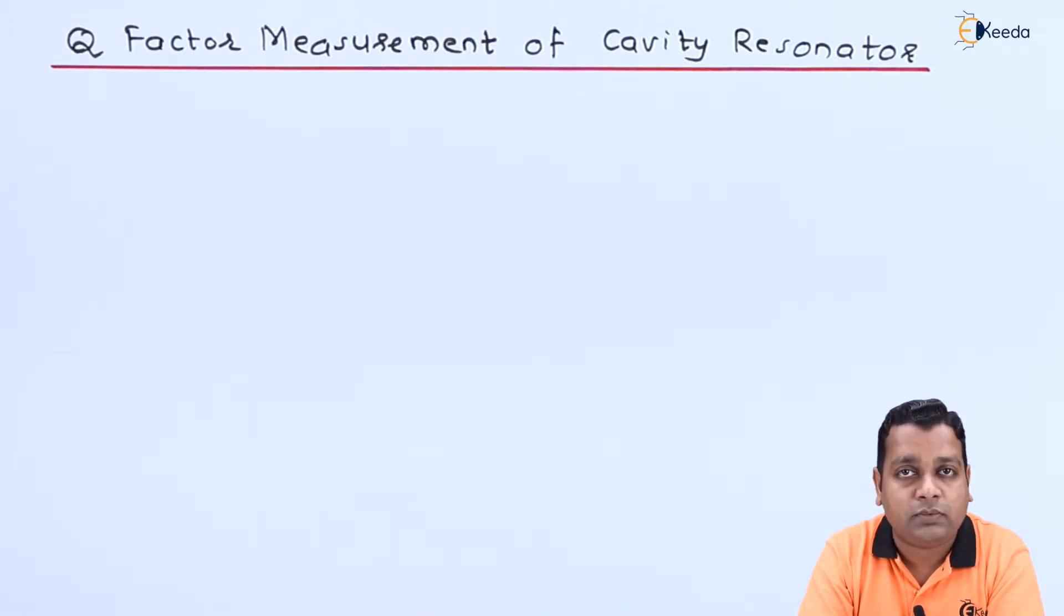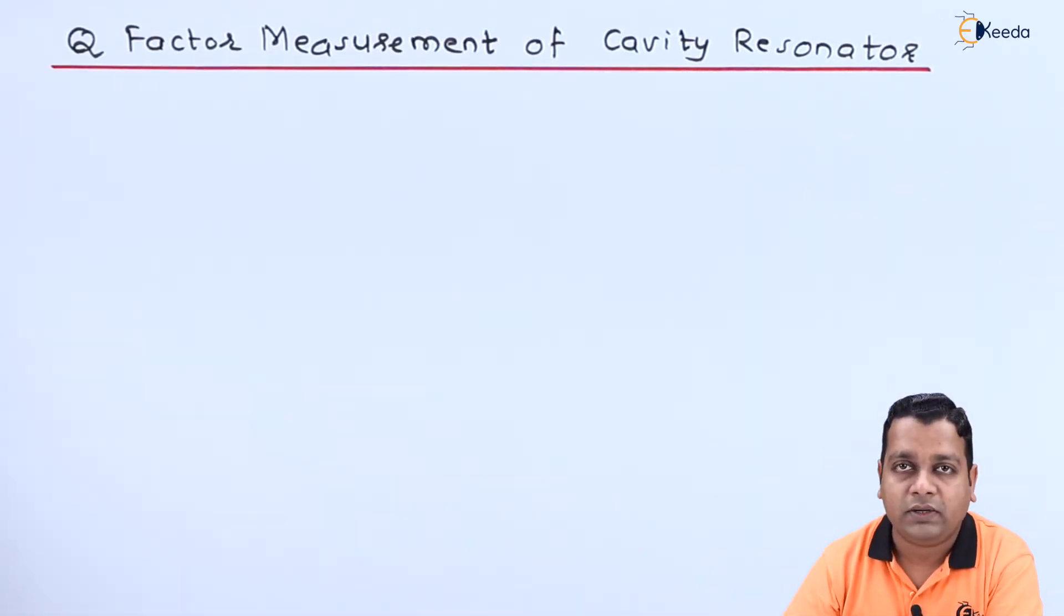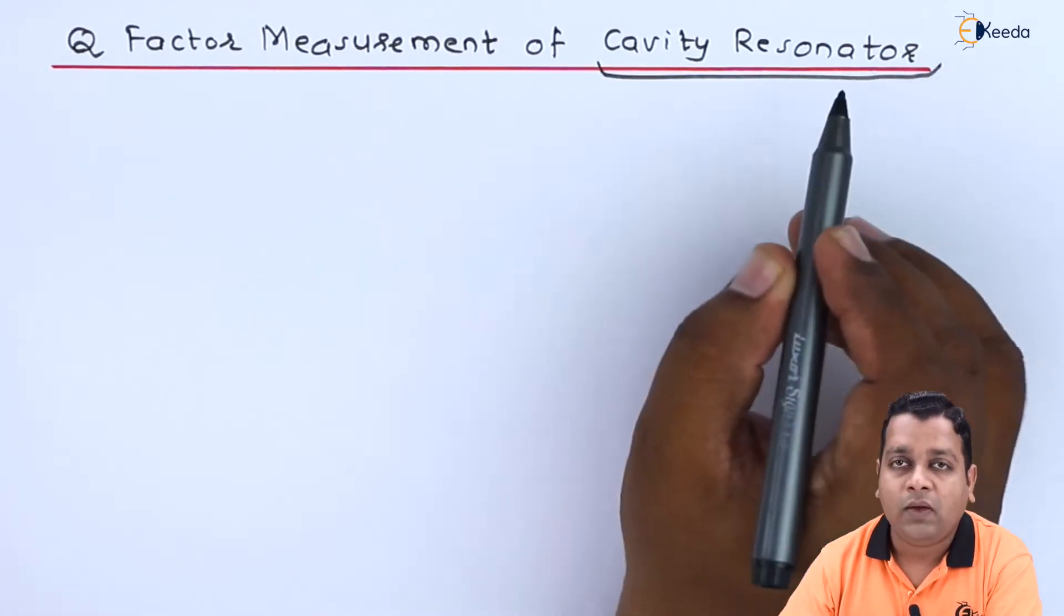Now the last topic, let us have the calculation of the Q factor, which is called the quality factor, which is for the cavity type of microwave resonator. So let us see the details. Here we start with our topic titled Q factor measurement of cavity resonator.